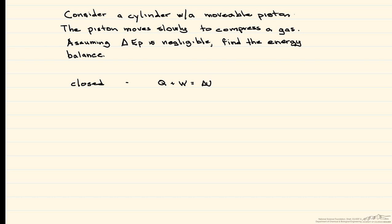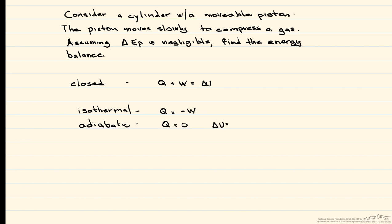What we're left with is Q plus W equals delta U. Now if this is carried out isothermally, that means delta U is going to be equal to zero. Therefore, Q is equal to minus W. If instead the system is adiabatic, that means Q is equal to zero, and we're left with delta U equal to W.